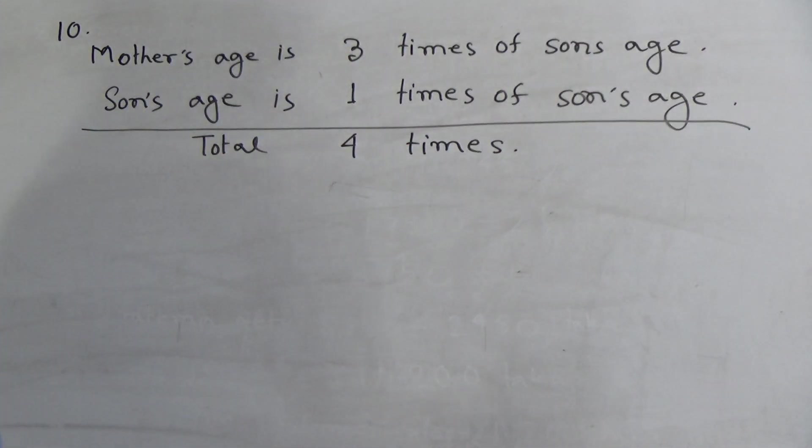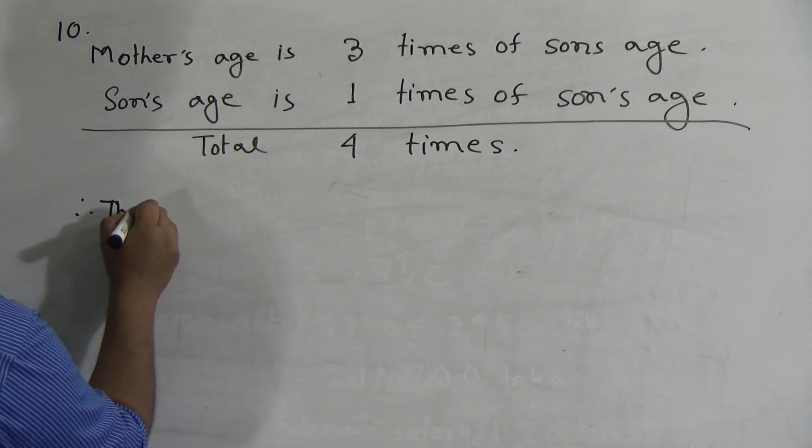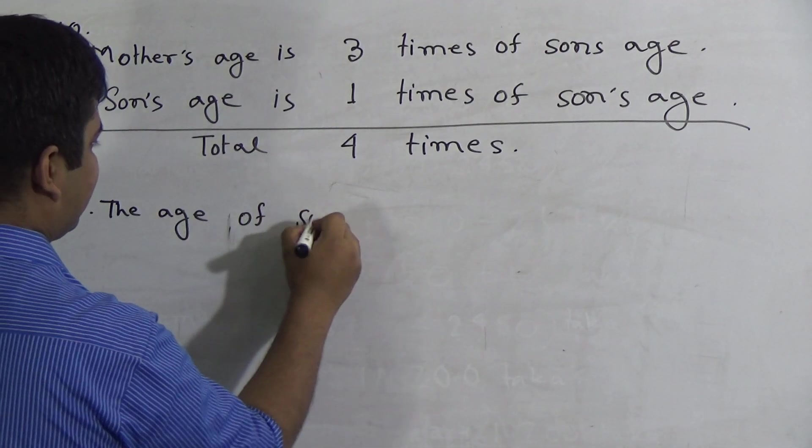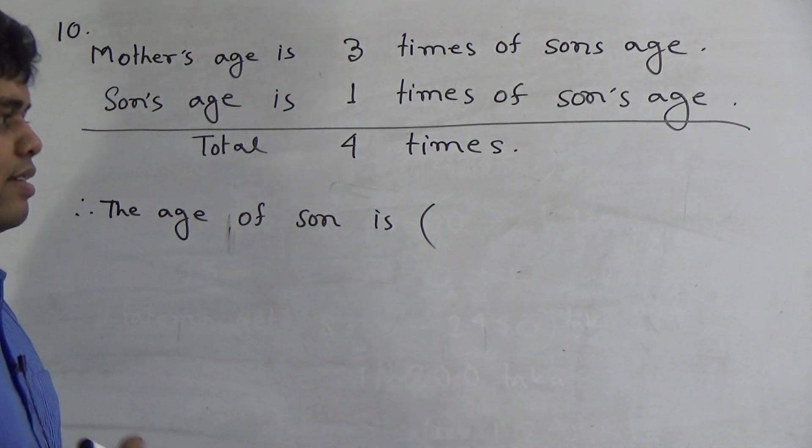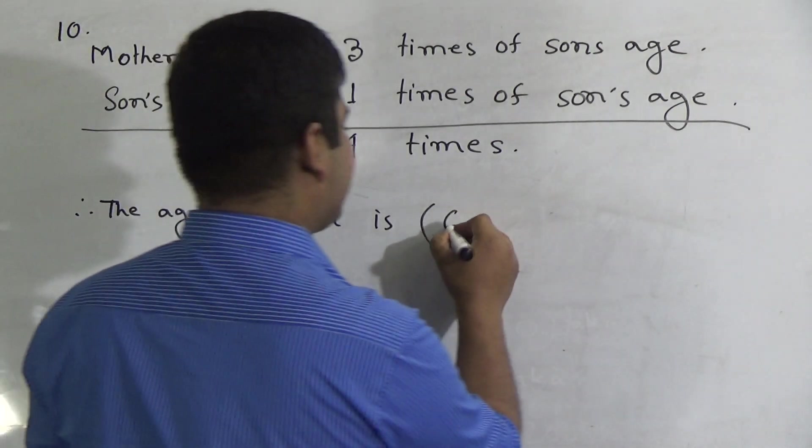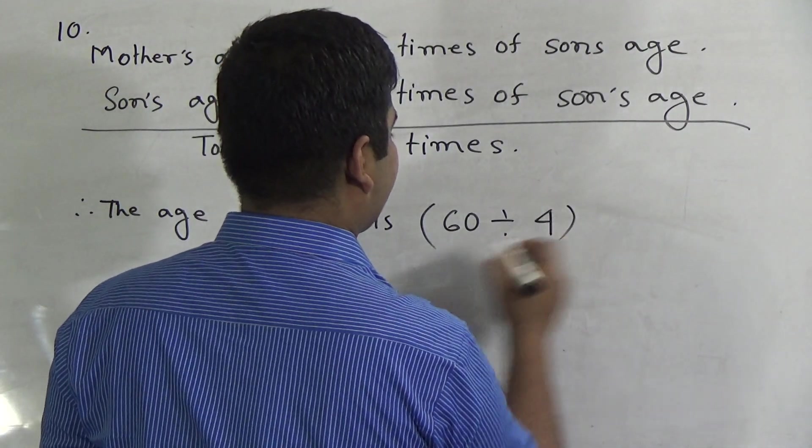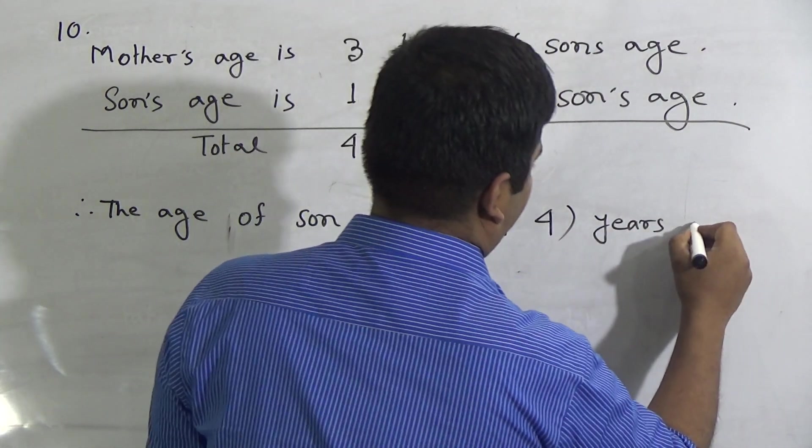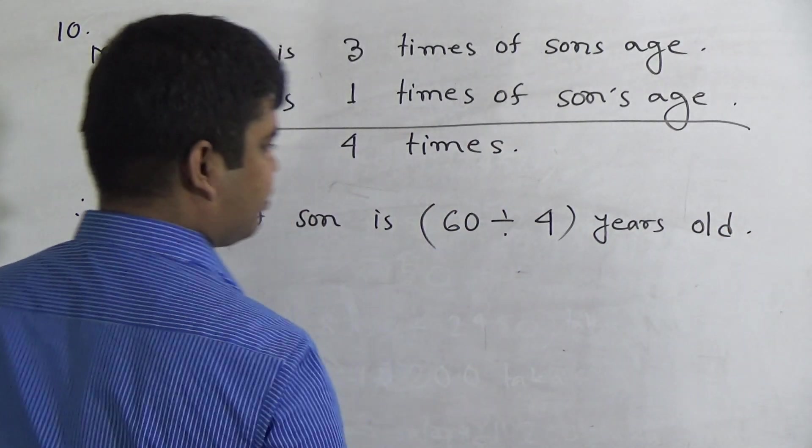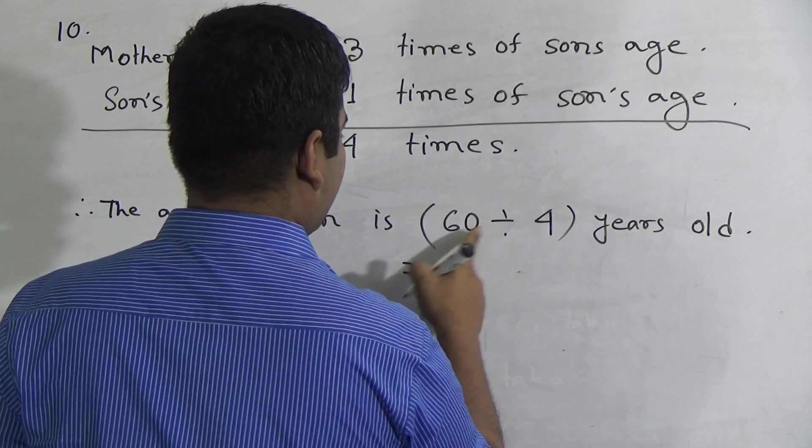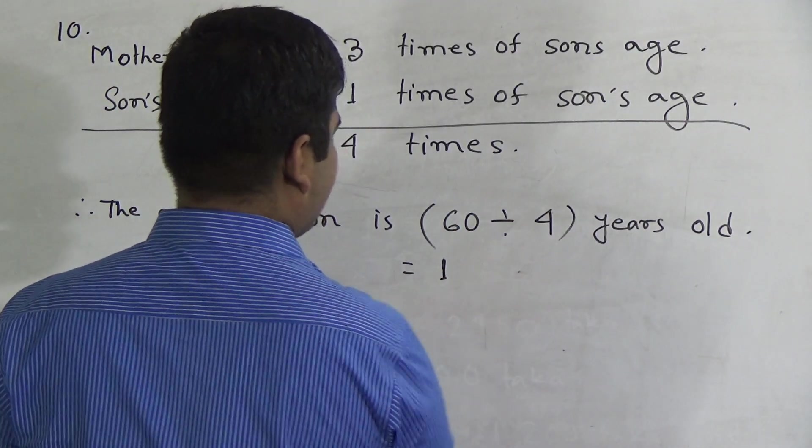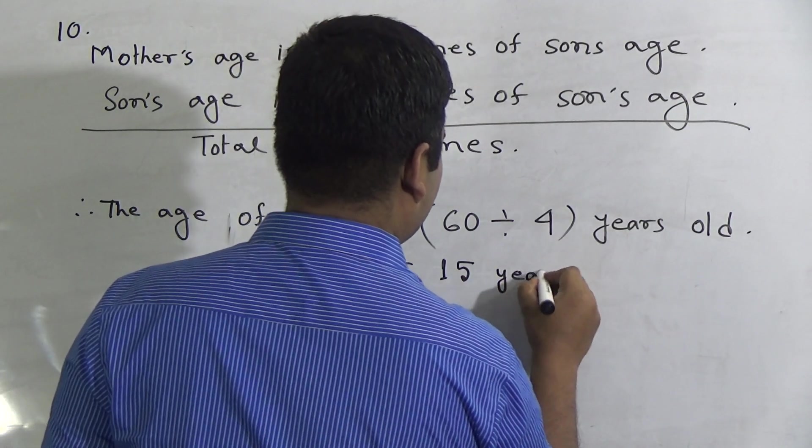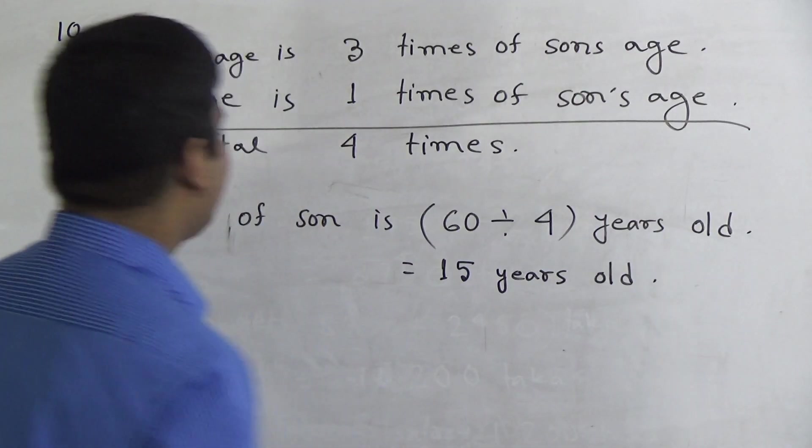Next we find out the age of son. So the age of son is total 60. So we divide this 60 by this total times 4 and we get the age of son. So in 6, 4 goes in 1 time. Subtract 2, 0, 20 goes in 5 times. So 15 years old is the age of son.